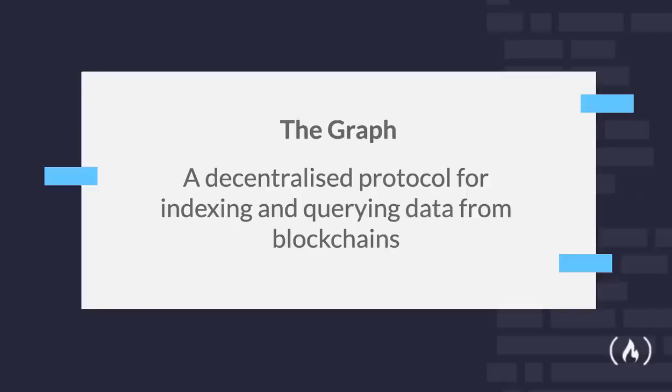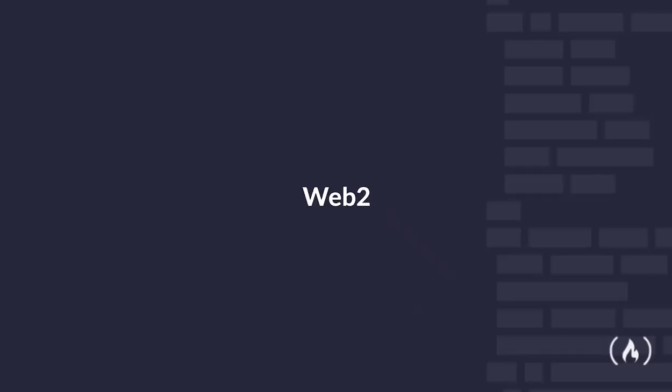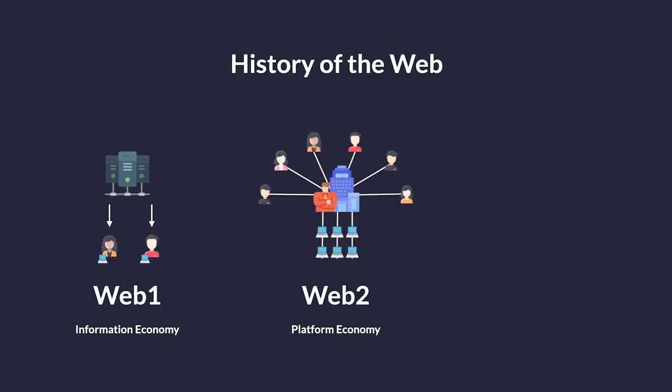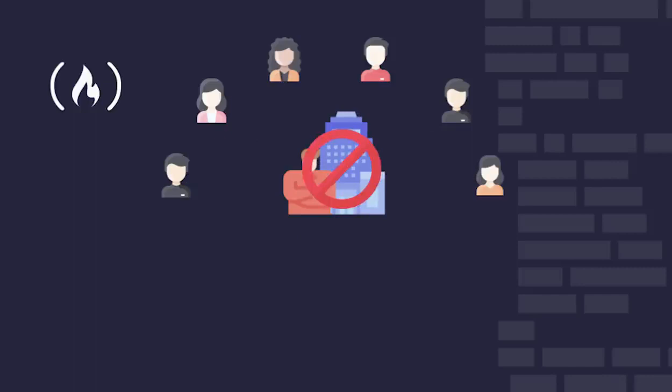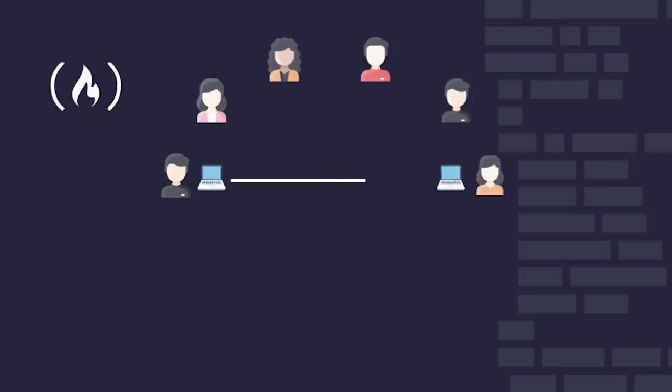So we have already covered what The Graph is — a decentralized protocol for indexing and querying data from blockchains. But why do we need a protocol for doing so? Most of our activity online today happens on an internet referred to as Web2. Web2 is widely considered to be an internet dominated by companies that provide services in exchange for your personal data. This was considered the norm until the introduction of Web3. Web3 bypasses all the large corporations and companies that Web2 relies on by communicating in a peer-to-peer way. With Web3, we are no longer relying on companies as our central hub for our services, but rather rely on peer-to-peer protocols.